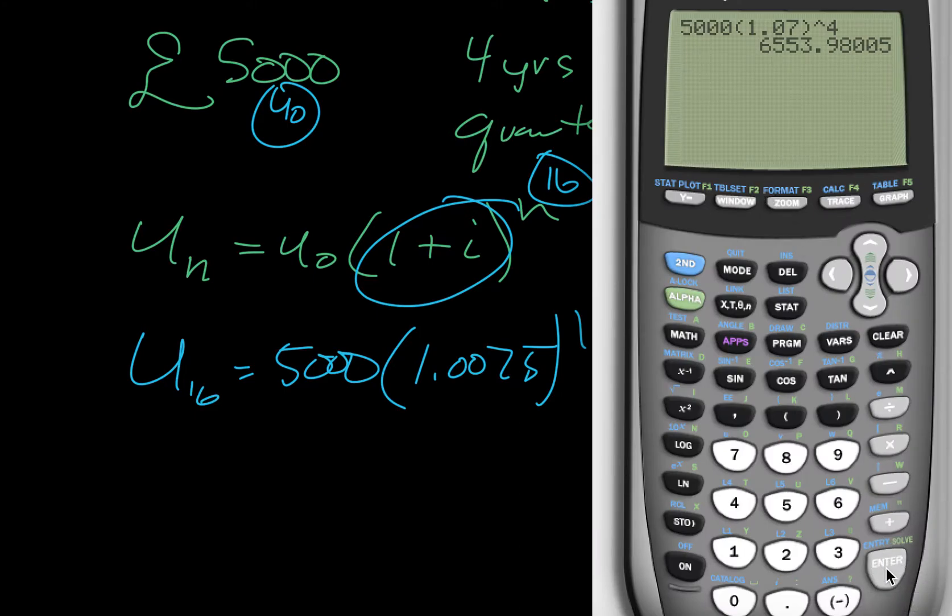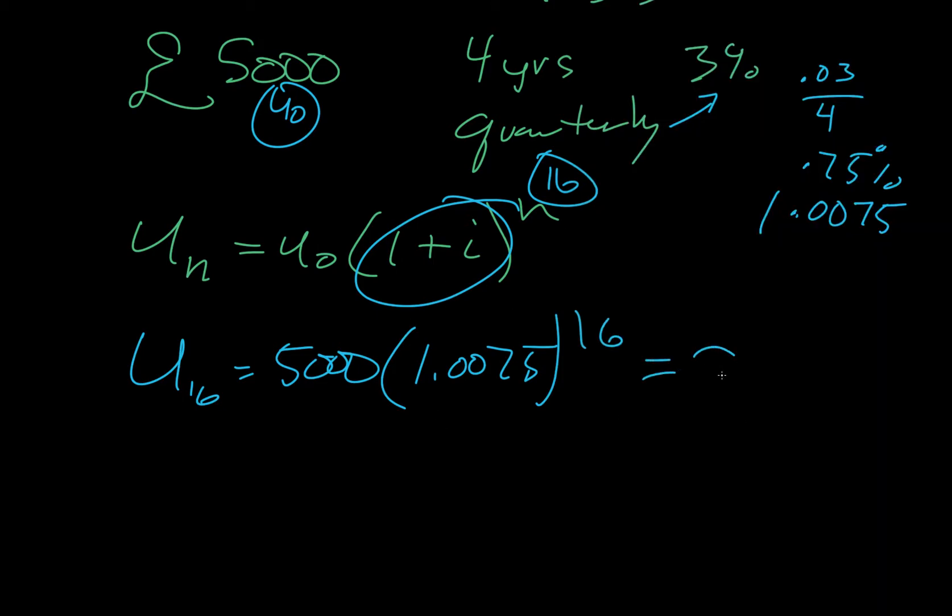We go here. Since it's the same form as the last one, I'm going to do an entry. We already have 5,000. And then this is 0.0075. End that. Raise it to the 16. Hit enter. And we got 5,634.96.